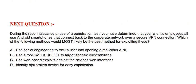Next question: During the reconnaissance phase of a penetration test, you have determined that your client's employees all use Android smartphones that connect back to the corporate network over a secure VPN connection. Which of the following methods would most likely be the best method for exploiting these? Option A: Use social engineering to trick a user into opening a malicious APK. Option B: Use a tool like ICSS-PLOIT to target specific vulnerabilities. Option C: Use web-based exploits against the device's web interfaces. Option D: Identify a jailbroken device for easy exploitation. The correct option is Option A.